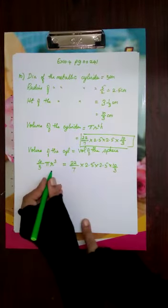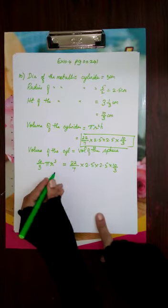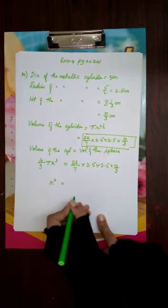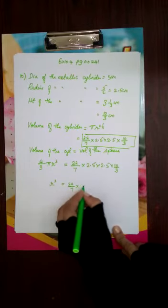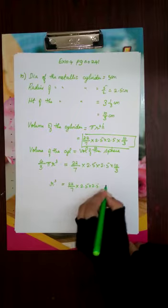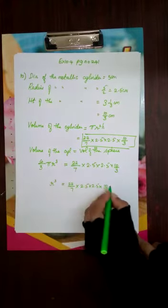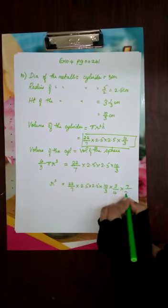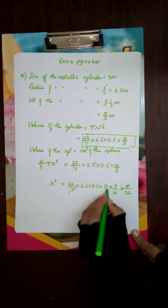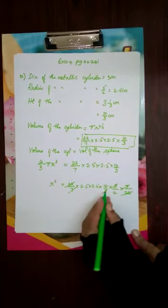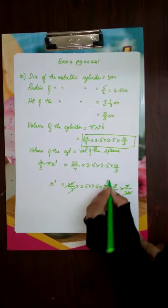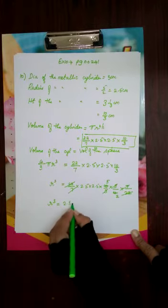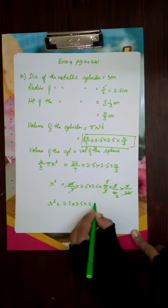We need to find the diameter, so let me find r first. Keeping r³ on the left-hand side and sending all other terms to the right: r³ = (22/7 × 2.5 × 2.5 × 10/3) × (3/4) × (7/22). The 7s cancel, the 3s cancel, the 22s cancel, and 10 and 4 cancel using the 2-times table — leaving 5/2. So r³ = 2.5 × 2.5 × (5/2) = 2.5 × 2.5 × 2.5, which is 2.5³.